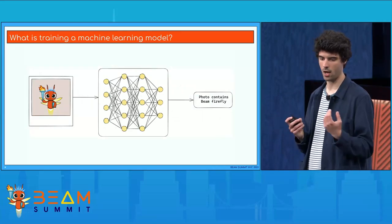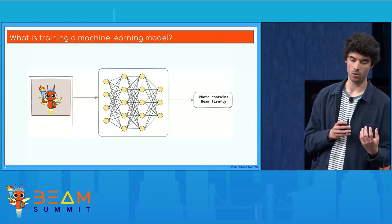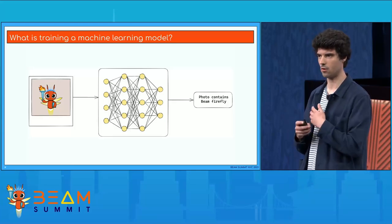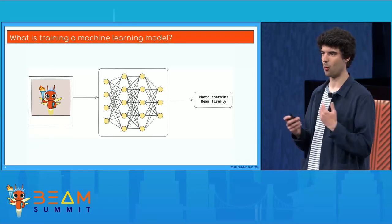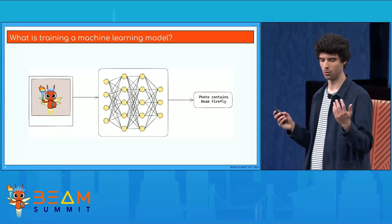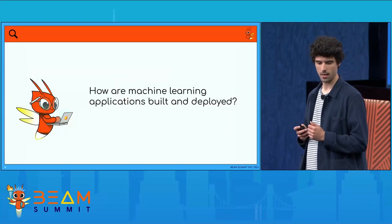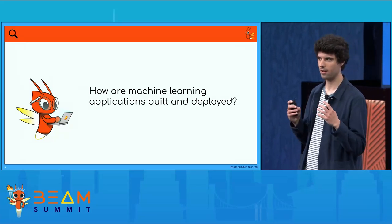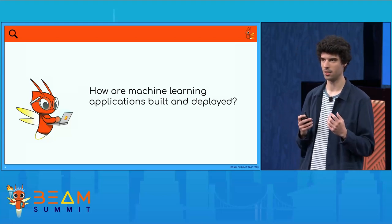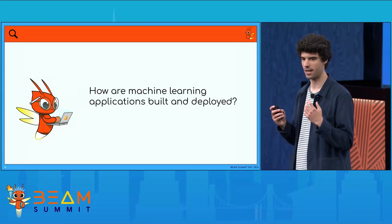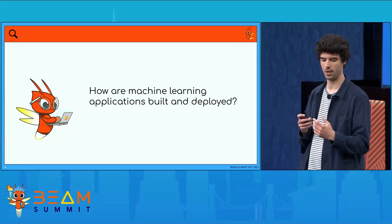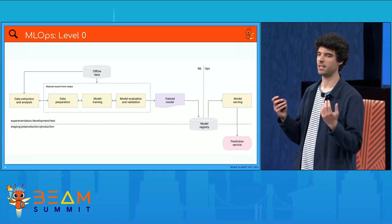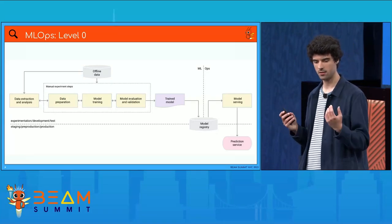What we have after training is a model that you can give an input — a photo — and it will return whether that photo contains the firefly. Machine learning has a lot of applications and everybody has seen cool things being done with it. Developing ML applications is actually quite a big difference from just training a model. Training a model is a very small step in the whole development cycle, something that's often forgotten by people who have never really developed one.